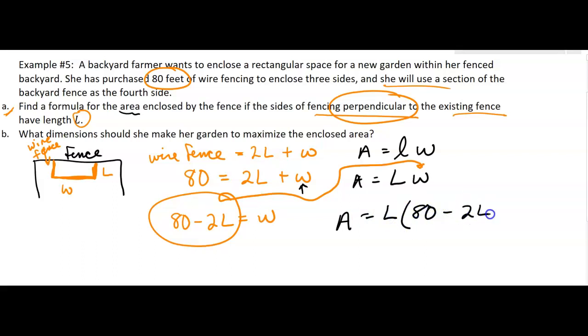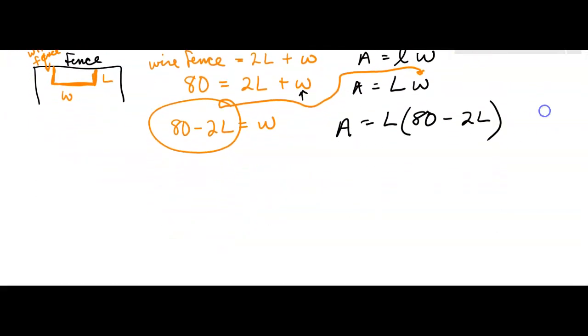So my area is equal to the length times 80 minus 2L. You may have done problems with rectangles and area in the past. This formula I have then is a function. It's in terms of L, so if I wanted to I could write A of L equals, now I'm going to go ahead and multiply this out, I'm going to get negative 2L squared plus 80L.